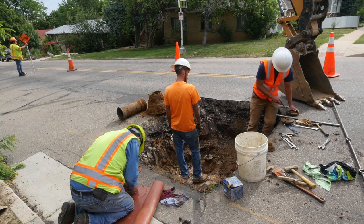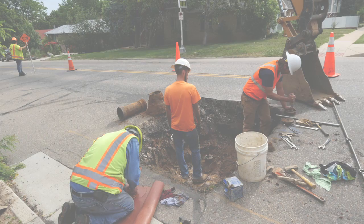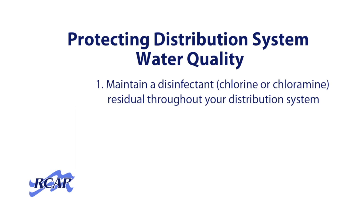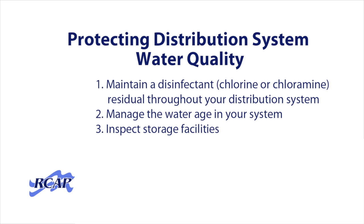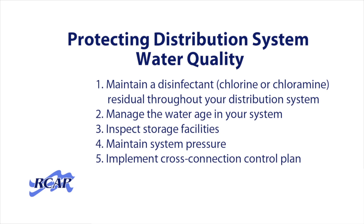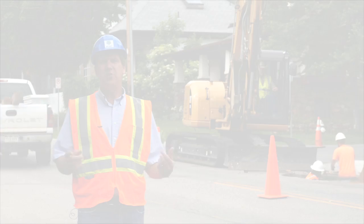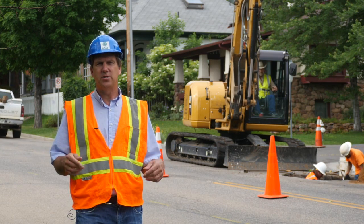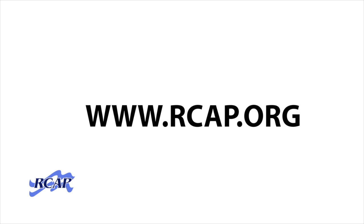This video discussed six practices that are key to maintaining distribution system water quality: ensure that you're maintaining a disinfection residual throughout your distribution system; manage the water age in your system; routinely inspect your storage facilities; maintain system pressure; have a cross-connection control plan and implement it; and listen to your customers. These practices need to be supported with other operations and maintenance practices addressed in other RCAP training modules. For more information about distribution system water quality and other topics, visit our website at RCAP.org.